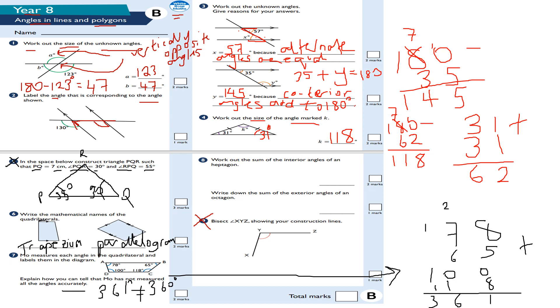Because angles in a quadrilateral must always add up to 360 — that is the rule. So that's the way of showing that Mo's measurements are inaccurate.